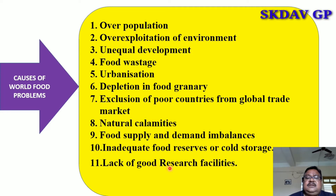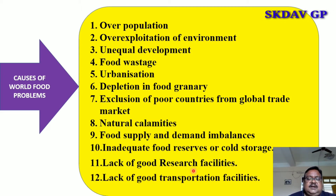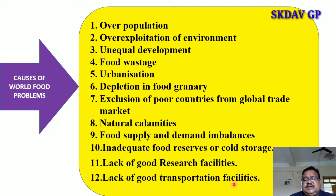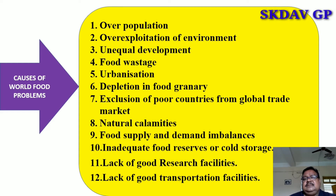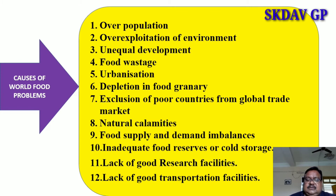Lack of good research facilities — research facilities are not developed or, even if they are developing, they are not up to the mark. Lack of good transportation facilities — food production happening in remote areas cannot be transported to the right places due to inadequate transport facilities, and so food is wasted.